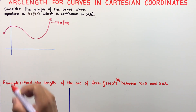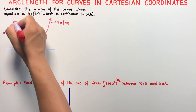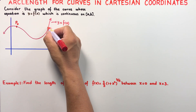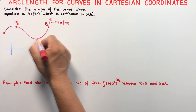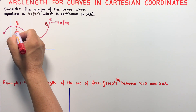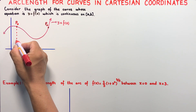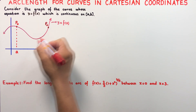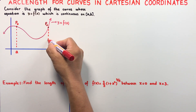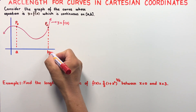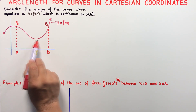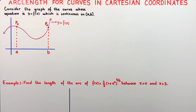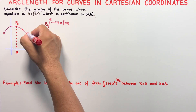Our goal is to find the length of this arc from point p sub 0 up to point p sub n. Suppose that p sub 0 has an x-coordinate at a, and p sub n has an x-coordinate at x equals b. Then we can find the length of this arc from p sub 0 to p sub n. The idea is to subdivide the whole arc into sub-arcs.